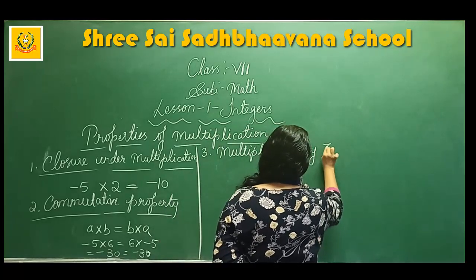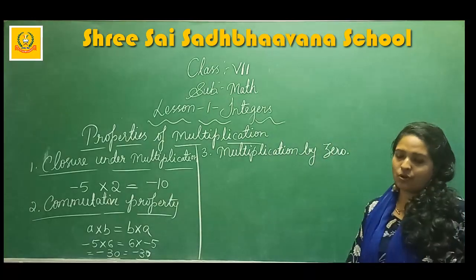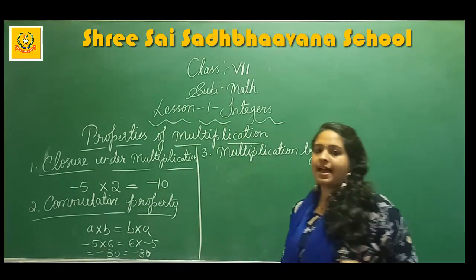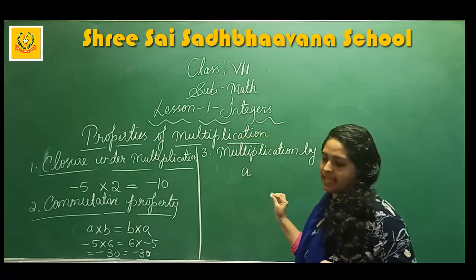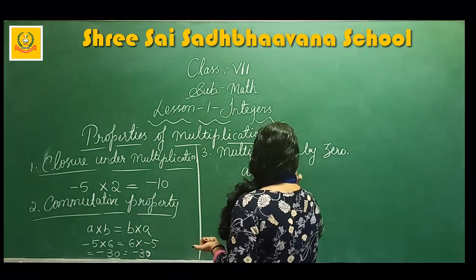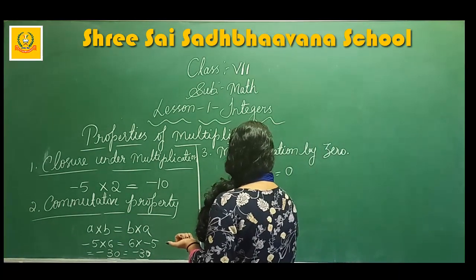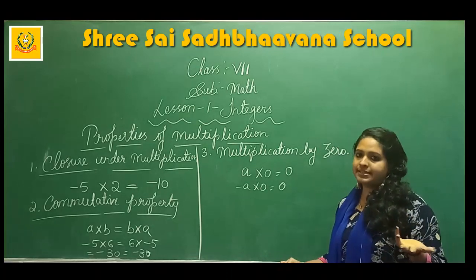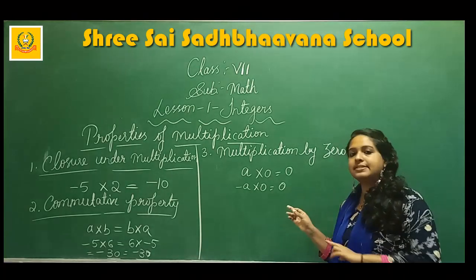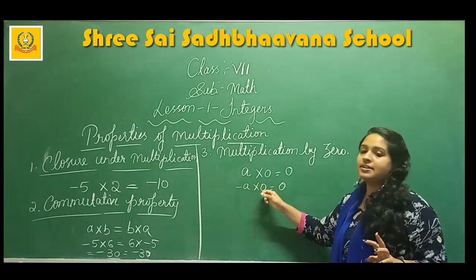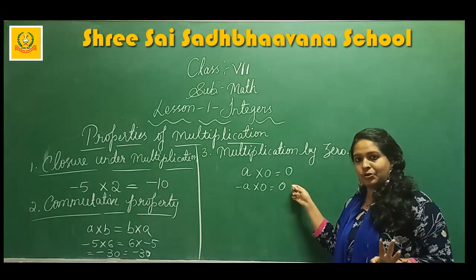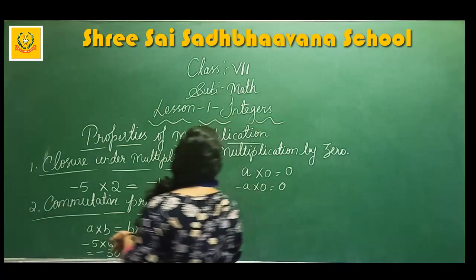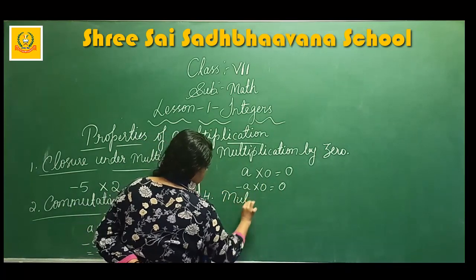The third property is multiplication by zero. This property says that when you are multiplying an integer by zero, you will get the answer zero. Whether it is a into zero or minus a into zero, the result is zero. When you are multiplying any integer — either positive or negative — with zero, the product is zero.